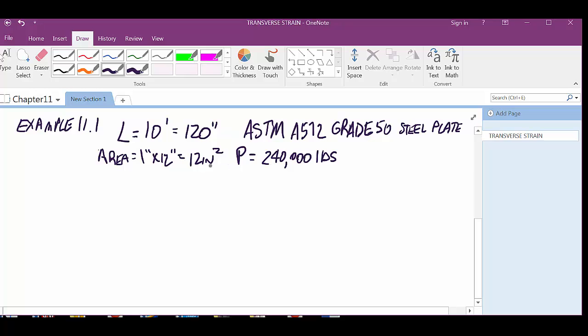So, to solve this problem, the axial tensile stress, so back to chapter 9, wasn't it? Tensile stress was P over A, right? And that's 240,000 pounds divided by 12 square inches, right? 20,000 PSI. Pounds per square inch, or kips per square inch.